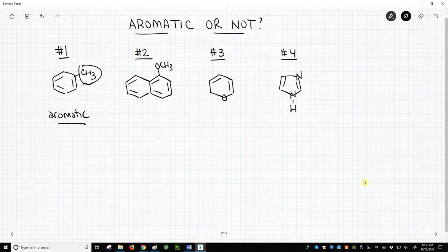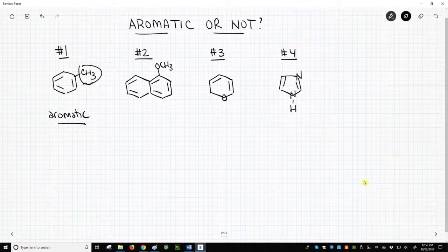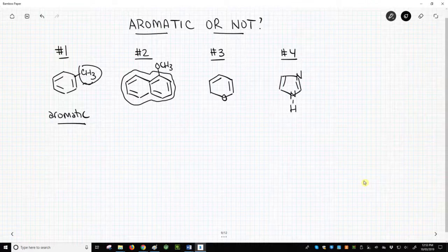Example 2 – 1-methoxy-naphthalene. We do have a ring, but now there are two rings. Don't complicate this. Just look at this molecule as having one big ring instead of two little ones.